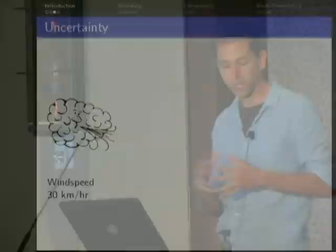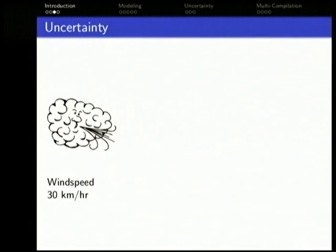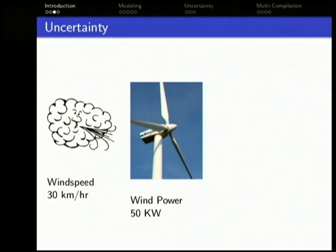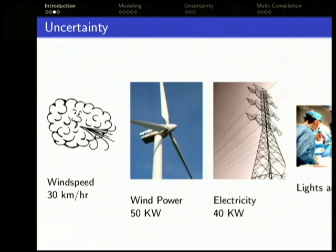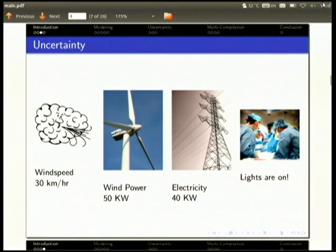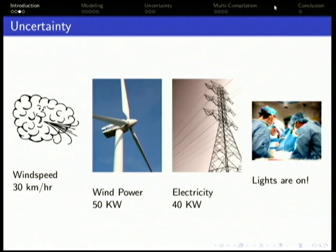Imagine there's some wind. You want to get energy from it. The wind's going 30 km an hour. You have some model that tells you you get 50 kilowatts. You have some other model that talks about transmission of electricity through the grid. It's a very complex problem. We'll get models. On the left we have some inputs, we have some model in the middle, and on the right we have this conclusion: the lights are on, we can perform surgery. That's great.